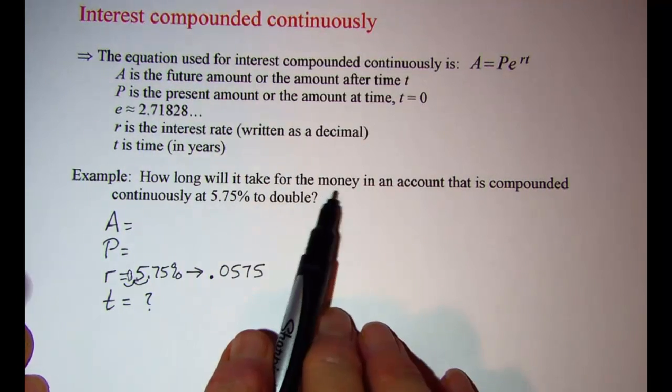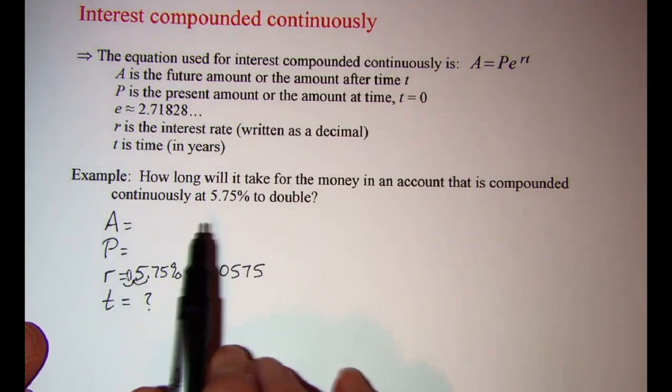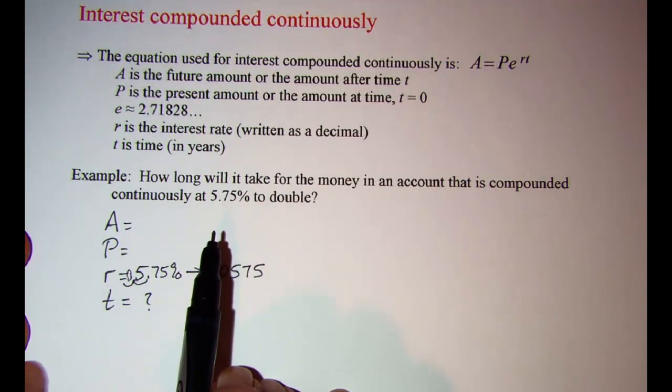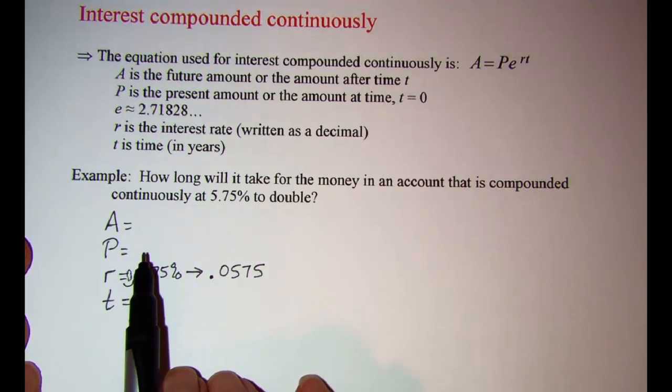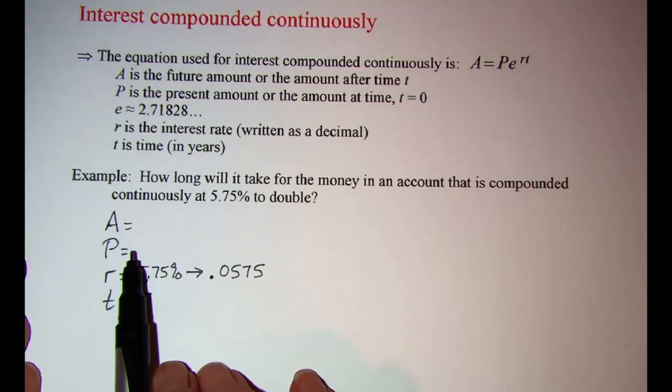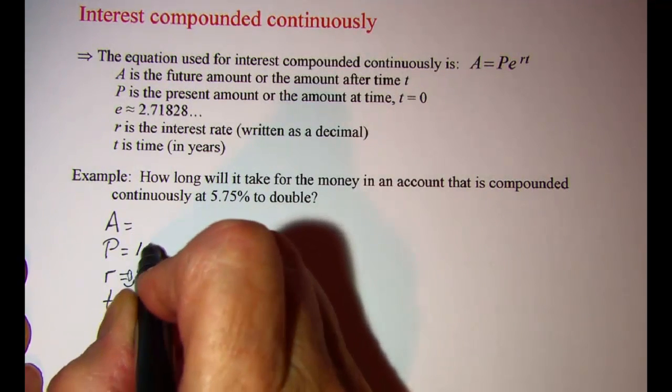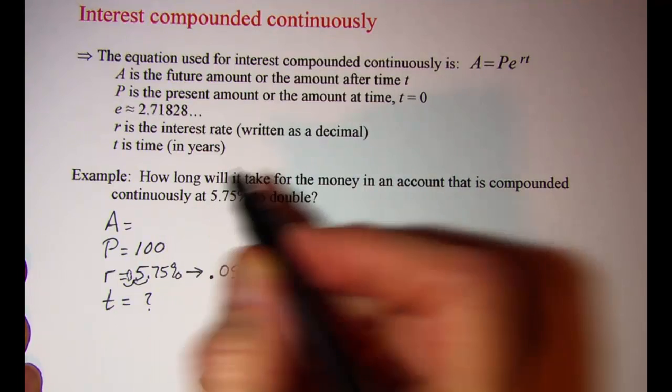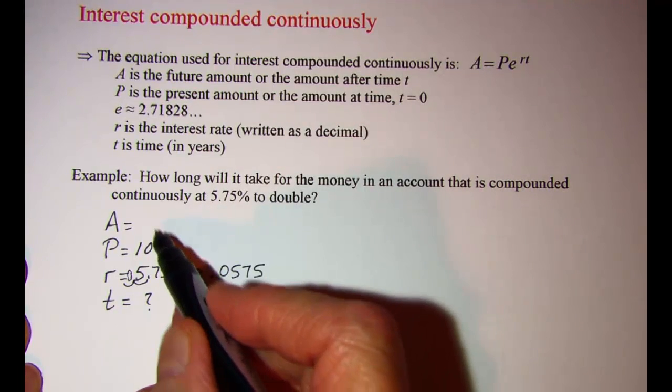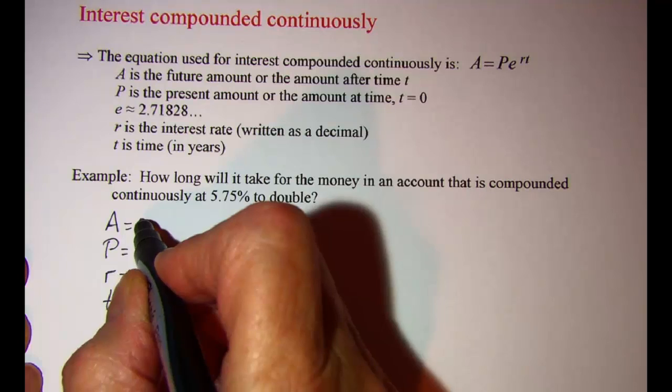Now they're not giving us any amount of money. So we could, if we wanted to, put any amount in as our principal, our present value. So let's just say we want to invest $100. Then for it to double, that means our future value needs to be $200.